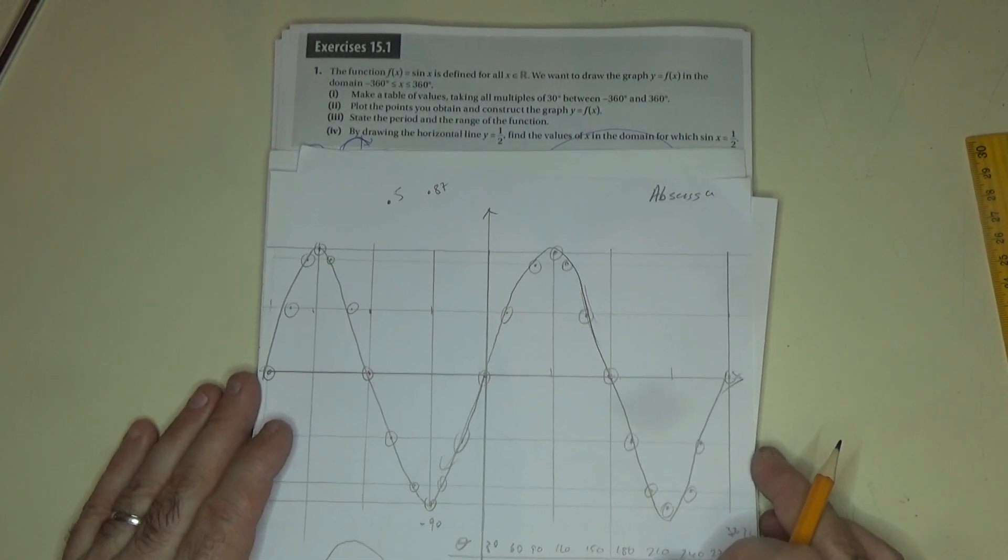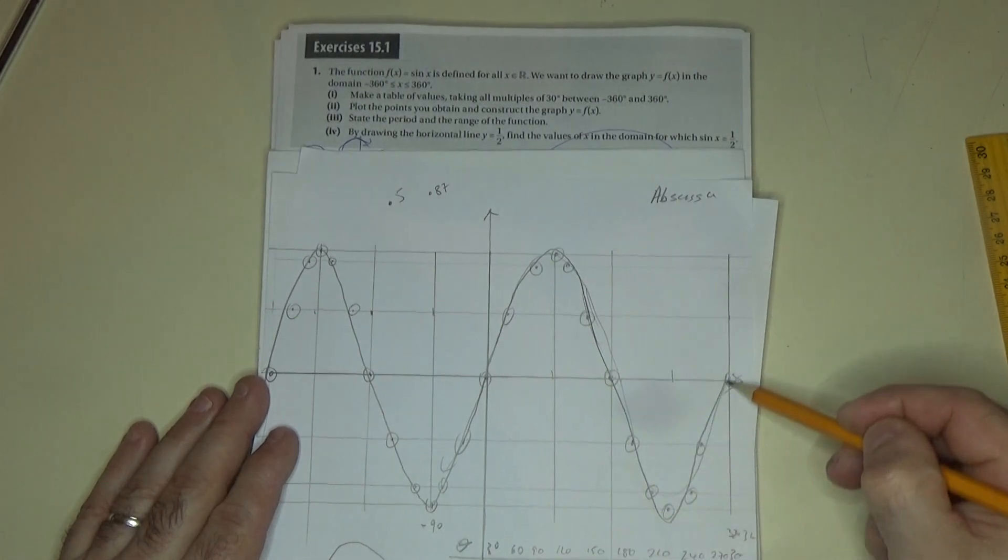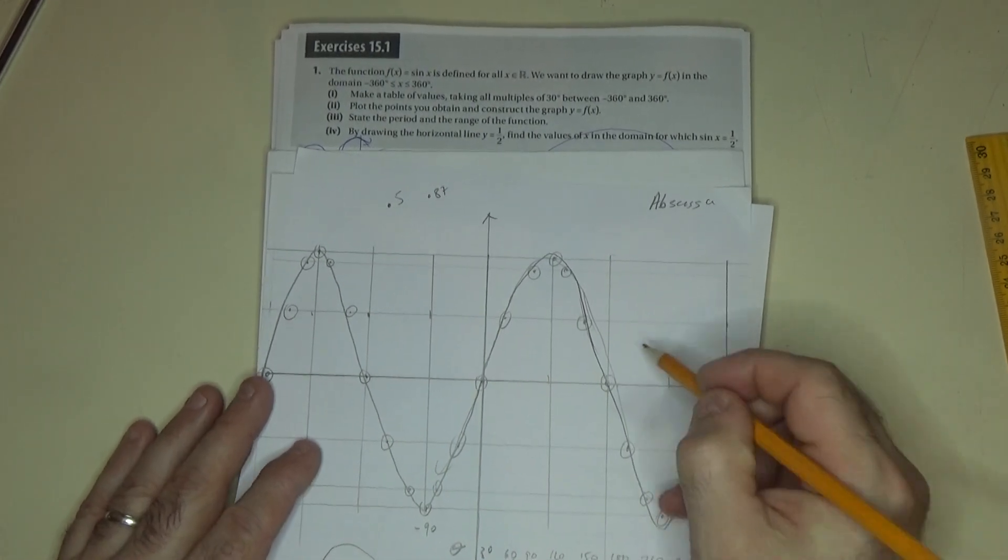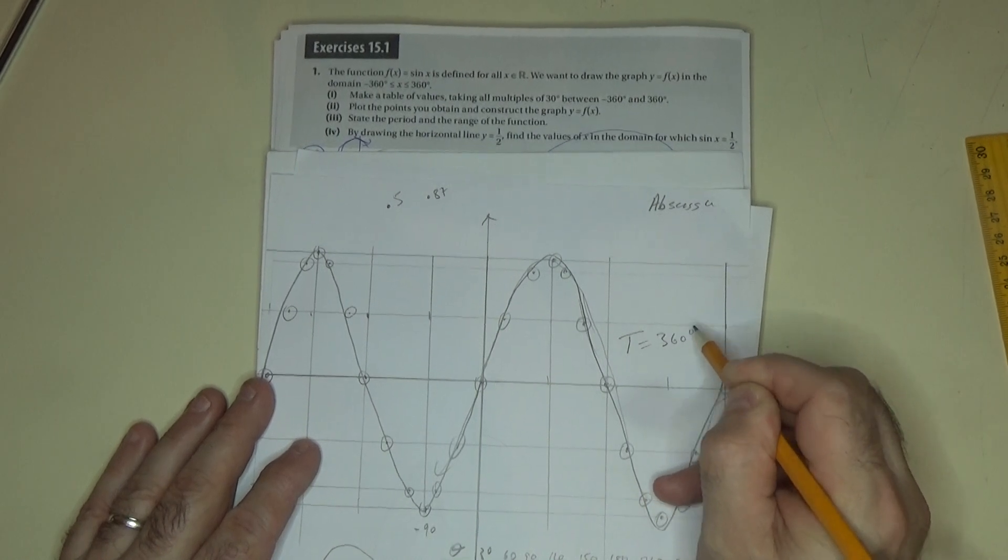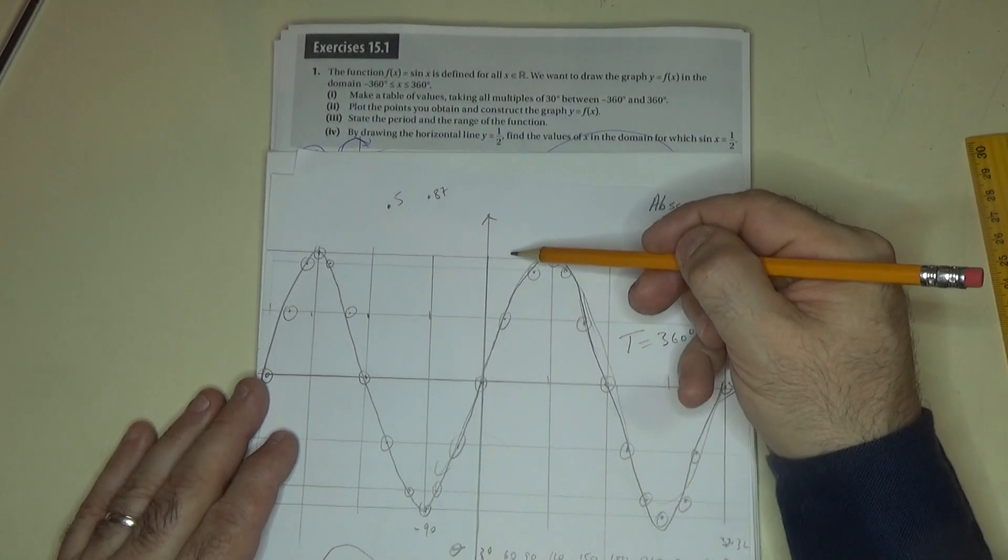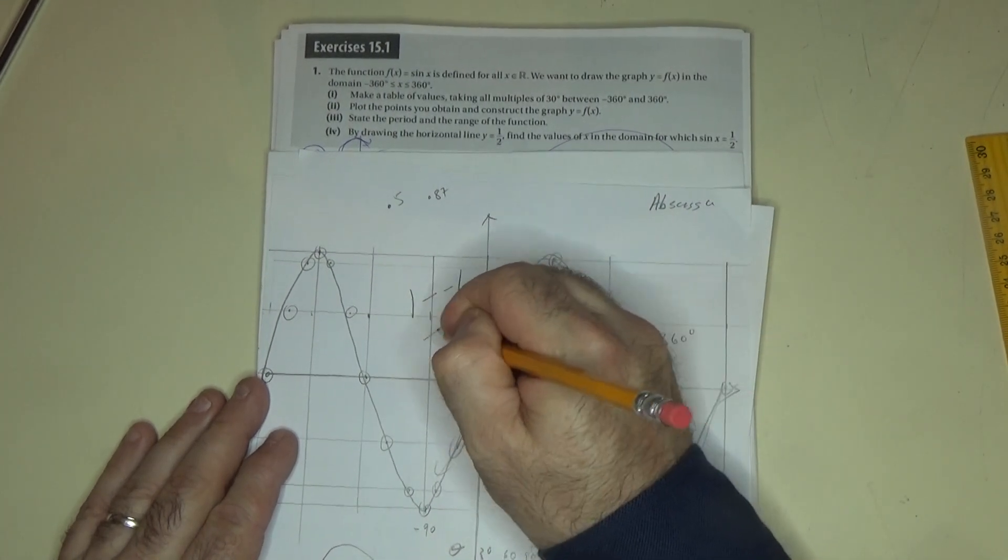State the period and range of the function. So the period—it repeats after 360 degrees—the period equals 360 degrees. The range is the top value minus the bottom value, which is 1 minus negative 1, which is equal to 2. So the range is 2.